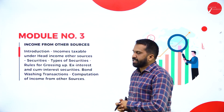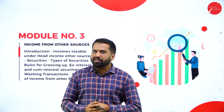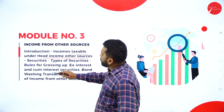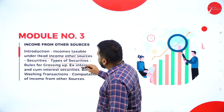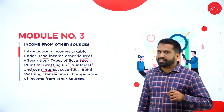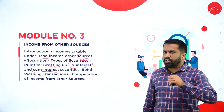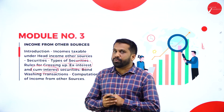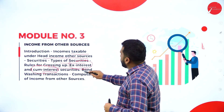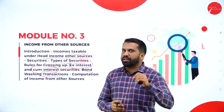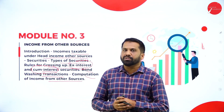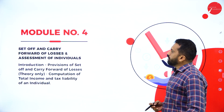Income from other sources: as mentioned, any income other than the four heads automatically goes under income from other sources. We will cover types of securities, rules for grossing up, ex-interest, cum-interest — these are the major items. Many students make mistakes while doing ex-interest and cum-interest, so I will give you the basic fundamentals clearly. The bond washing system is also a very interesting topic. Then we will cover the computation of income from other sources.